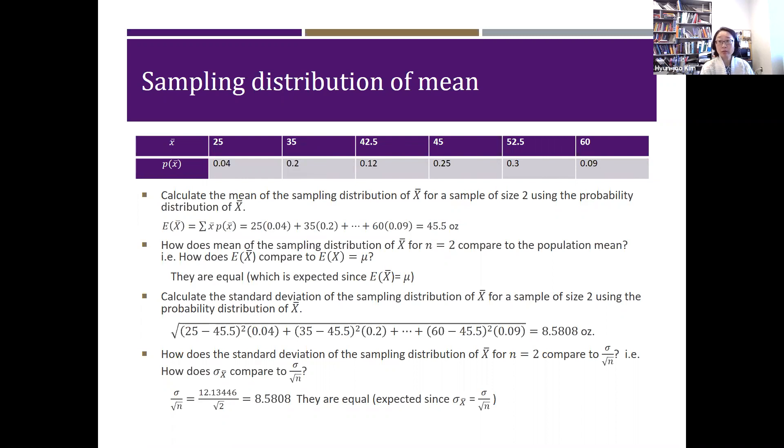So you can kind of do that. And then you can summarize that table like this. So 25 is 0.04, but there are two 35s and you add those probability of it, become 0.2 and so on. So there are six different cases, and then there are corresponding probabilities. Okay, so that's the probability distribution. Now, we want to think about where is the center of the mean, center of the X bar, and then standard deviation of X bar. And probably here, it will be kind of hard to talk about the shape a little bit.